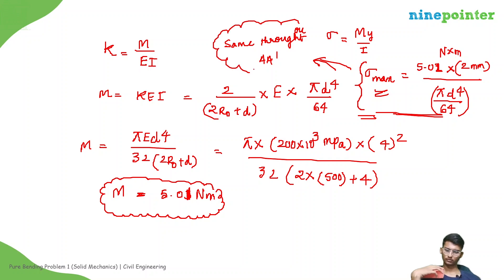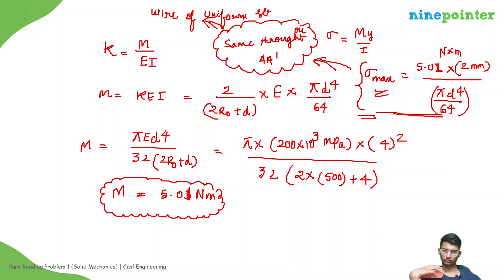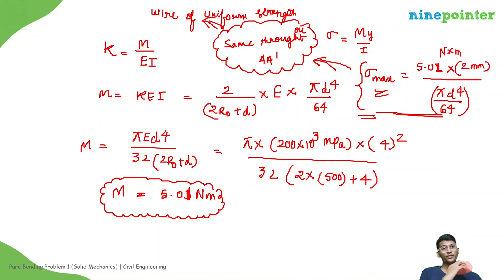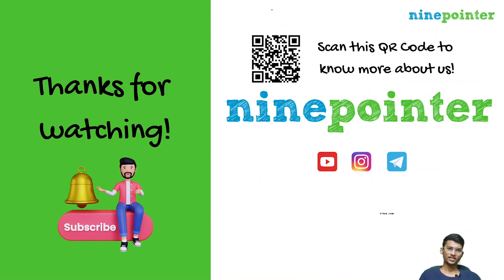The maximum bending stress is the same throughout region AA', so this is a wire of uniform strength — similar to bars of uniform strength where maximum normal stress is the same at every cross-section. With this we end today's lecture. In the next lecture, we will discuss one more problem to understand these concepts. If you like this lecture, do subscribe to our channel, My Pointer. Thank you.